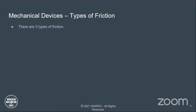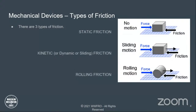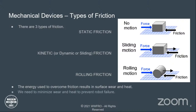There are three types of friction: static friction, where there's no motion; kinetic, also called dynamic or sliding friction, when the material starts to move; and rolling friction, which is a roller rolling along a surface. The energy used to overcome friction results in surface wear and heat. We need to minimize wear and heat to prevent a robot failure.